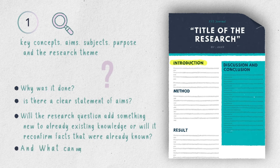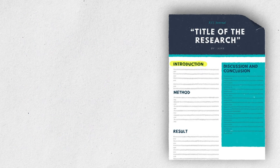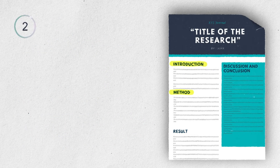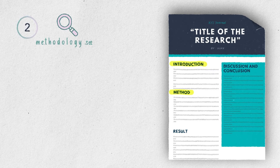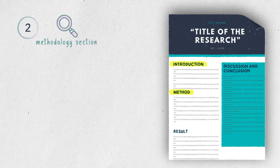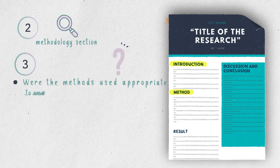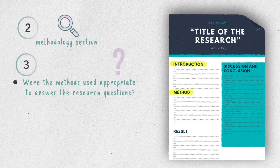Also ask: will the research question add something new to existing knowledge, or will it reconfirm facts that were already known — and what can we get out of it? Step 2 is to highlight the main information found in the methodology section, which provides a step-by-step description of how the research was done. This leads us to Step 3: questioning the method.